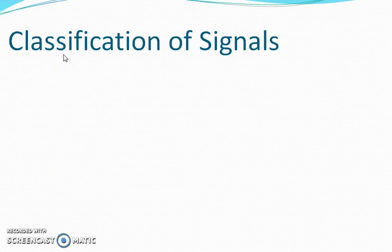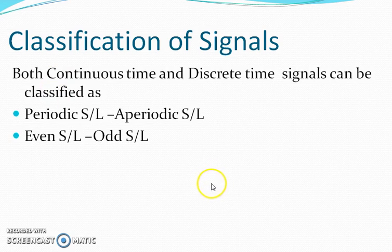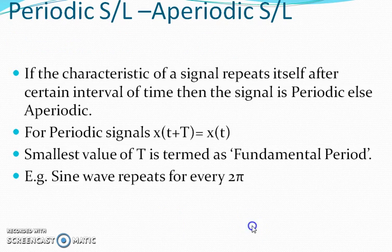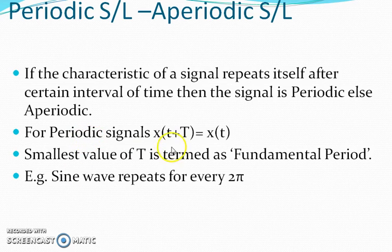Next, classifications of signals. Both continuous time and discrete time signals can be classified as: periodic, aperiodic, even signal, odd signal, deterministic and random signal, energy signal and power signal. A signal is periodic if its behavior repeats for a certain interval of time. For example, sine zero is zero, sine 360 is zero, sine 720 is zero — the amplitude repeats every 360 degrees or 2π radians. Therefore it is a periodic signal. The condition for periodicity is x(t + T) = x(t) for all t, where the smallest possible value of capital T is termed the fundamental period. If there is no such repetition, the signal is called aperiodic.